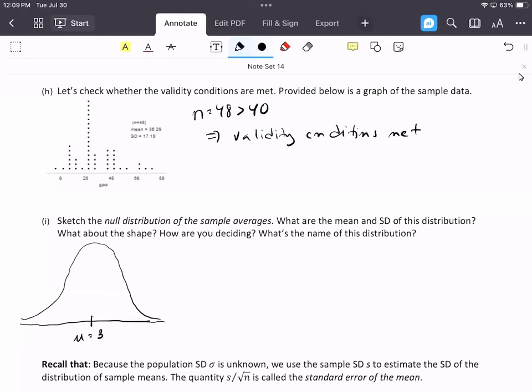The center is going to be mu equals 30. We don't have the population standard deviation, so are we going to use the normal or the T? We're going to use the T distribution for that shape of the null distribution of sample means. Remember, if we knew what sigma was, we could use normal approximation, but since we don't, we can't.